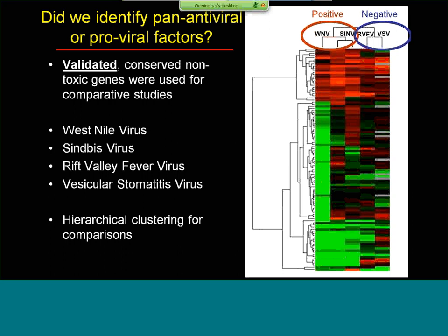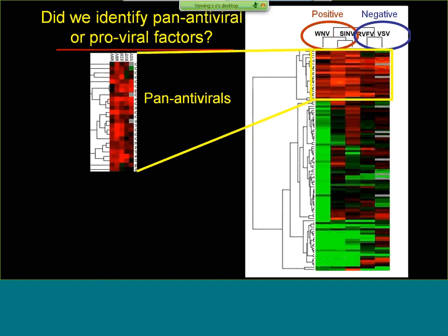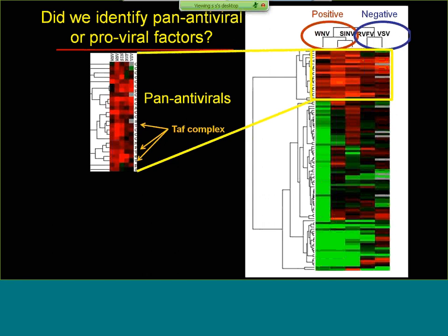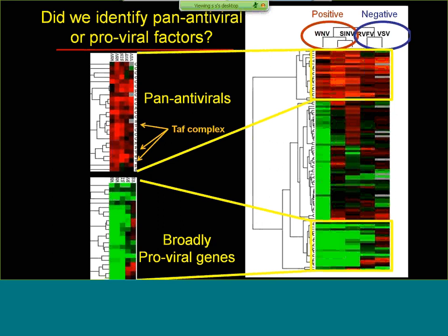We were interested in identifying pan-antiviral factors, and found a number of genes that impacted all these viruses. Among these were complexes such as the TAC complex, required for transcription, suggesting a potent antiviral transcriptional response that blocks replication of all these viruses. There was also a small number of broadly proviral genes, and as you might guess, among these are genes involved in endocytosis — the route all four of these viruses take to infect cells. We are now working to understand the mechanisms by which these factors are antiviral or proviral against such a broad group of viruses.